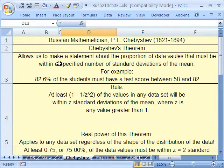But this theorem, very powerful, allows us to make a statement about the proportion of data values that must lie within a specific number of standard deviations of the mean. That's exactly what we were talking about with our z-score in last video.